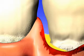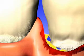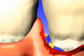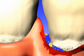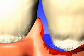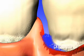Gingival crevicular fluid slowly breaks down the polymer, causing water-filled channels to form inside the microspheres. These channels provide escape routes for the sustained release of the encapsulated antibiotic. The active drug diffuses out of the microspheres into the surrounding tissue where it begins to eliminate the periodontal pathogens.